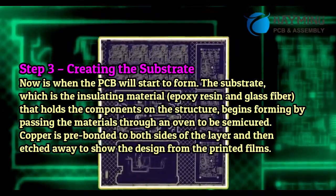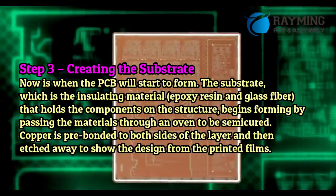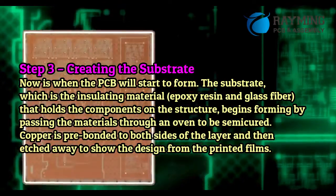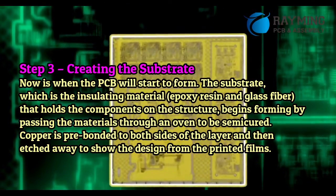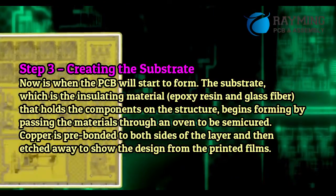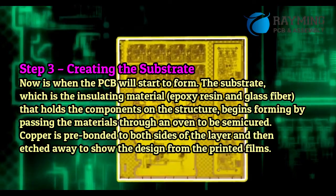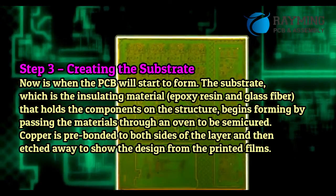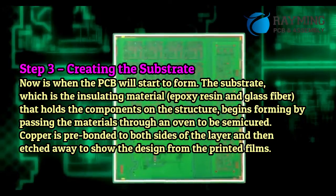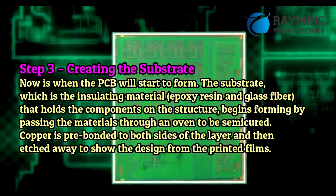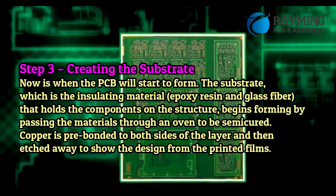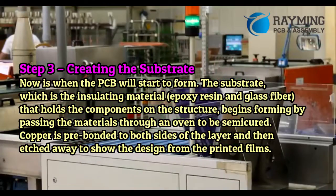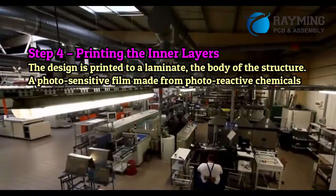Step 3 — Creating the Substrate. Now is when the PCB will start to form. The substrate, which is the insulating material — epoxy resin and glass fiber — that holds the components on the structure, begins to form. The design is formed by passing the materials through an oven to be semi-cured. Copper is pre-bonded to both sides of the layer and then etched away to show the design from the printed films.